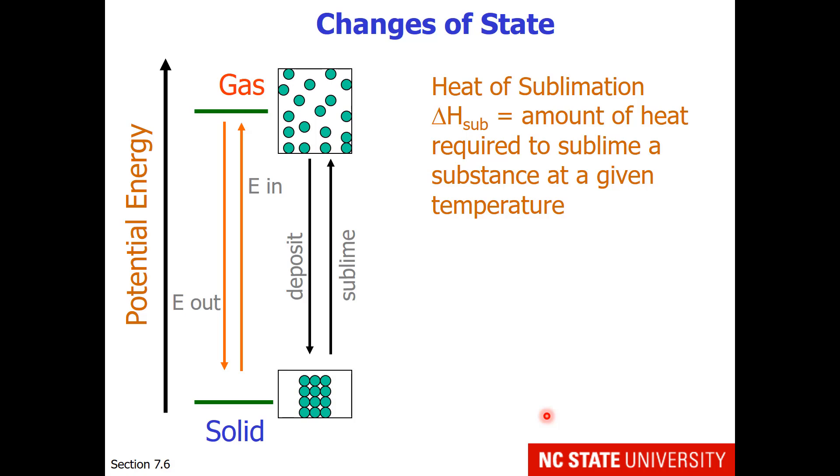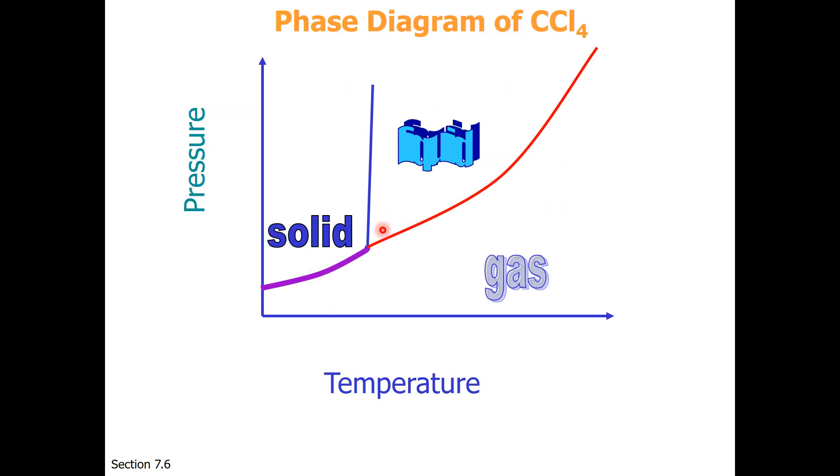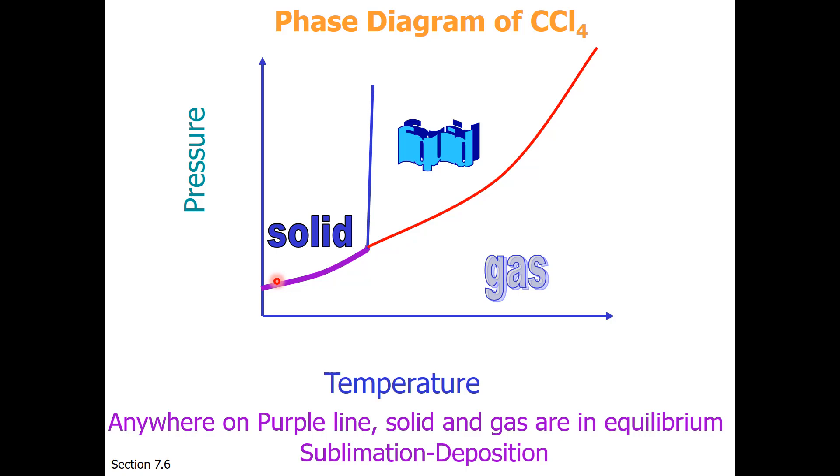Our last change of state is solid to gas. When this occurs directly, the enthalpy of change is known as the heat of sublimation. This will be the amount of heat required to sublime a substance at a given temperature. Where is this transition on the phase diagram? Anywhere between solid and gas phase, which is the purple line, is when solid and gas are in equilibrium, and sublimation and deposition are the two processes that occur.